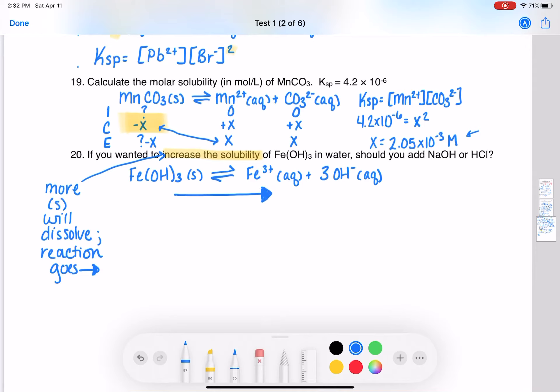How can we use Le Chatelier's principle to push the reaction in this direction? Our options are adding NaOH or adding HCl. Well, if we add NaOH, it is going to be increasing the amount of OH- we have. If we increase OH-, the reaction is going to move away from the OH-, to try to use it up, to get rid of the extra stuff that we added. And that's not what we want to have happen.